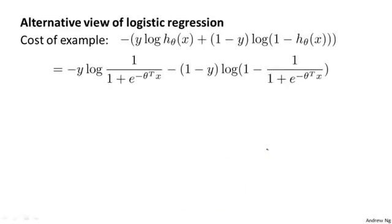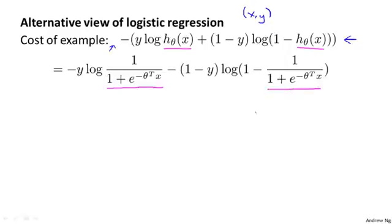If you look at the cost function of logistic regression, each example x, y contributes a term to the overall cost function. For the overall cost function, we also have a sum over all training examples and a 1/m term. If I take the definition of the hypothesis and plug it in, each training example contributes this term — ignoring the 1/m — to the overall cost function for logistic regression.